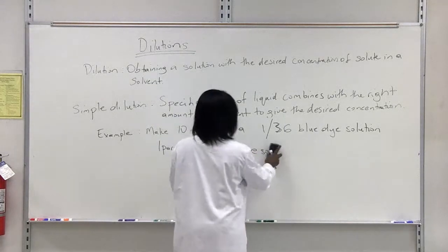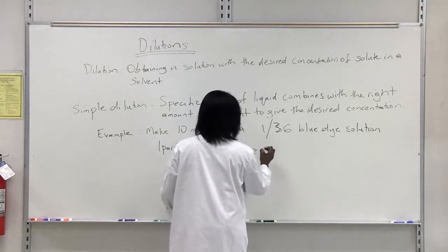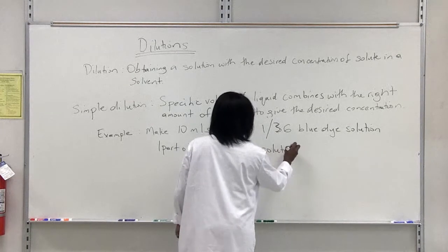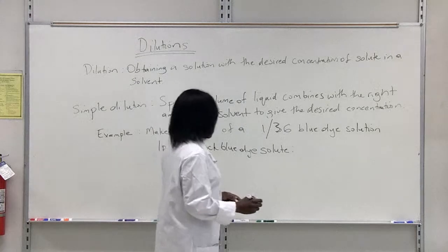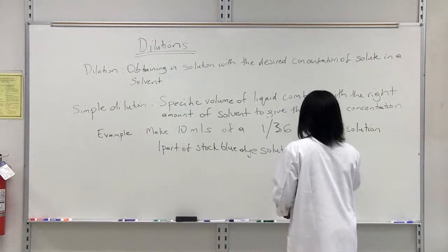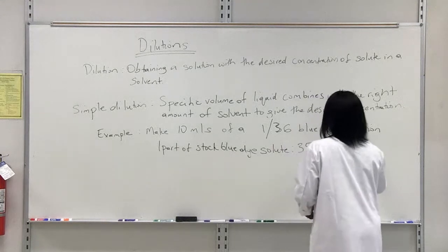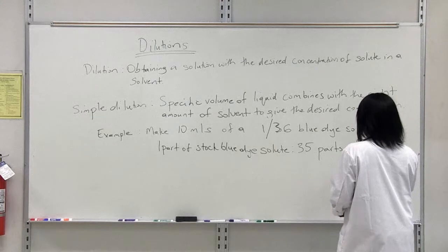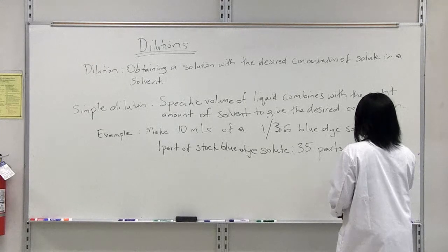Or, I should say, not solution—it's the solvent. The solute would be the blue dye. And you're going to add this to 35 parts of distilled water.